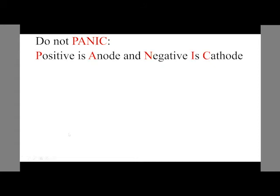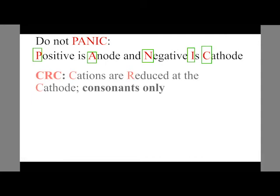What does this mean? It shows that we have P, which stands for positive, the A, which stands for anode, N for negative, and I for is and C for cathode. So in panic, we have positive is anode and negative is cathode. Very simple. Don't panic. You will always remember that.